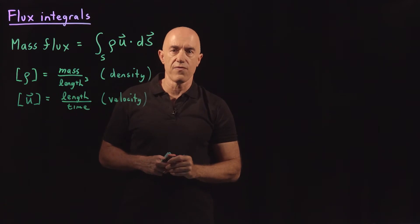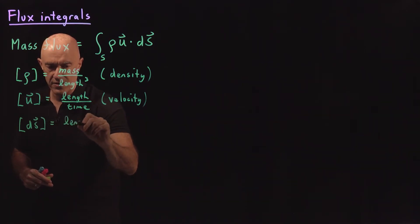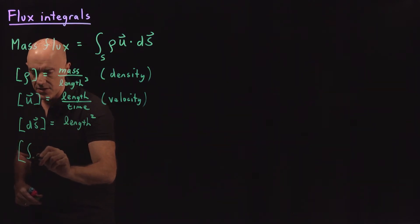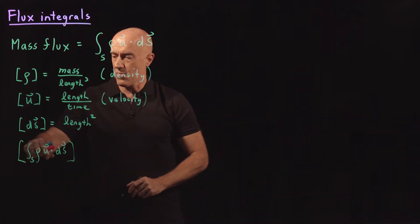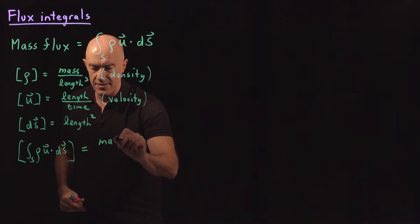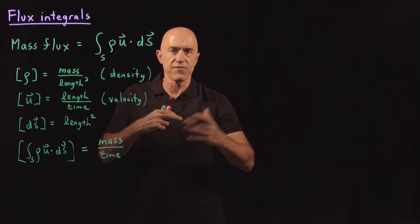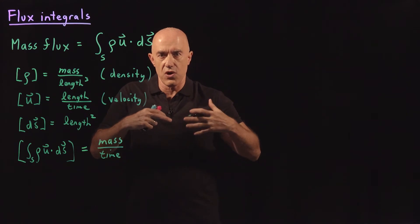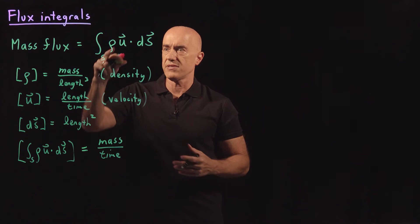We're integrating over the surface, so the units of our surface are going to be length squared — an area has units of length squared. Putting it together, the units of the mass flux, the units of the integral rho u dot dS, multiplying these three together, the length cubed cancels, and we end up with units of mass per unit time. The mass flux is the mass per unit time of the fluid that flows through this surface S, dotted with the normal vector to the surface.